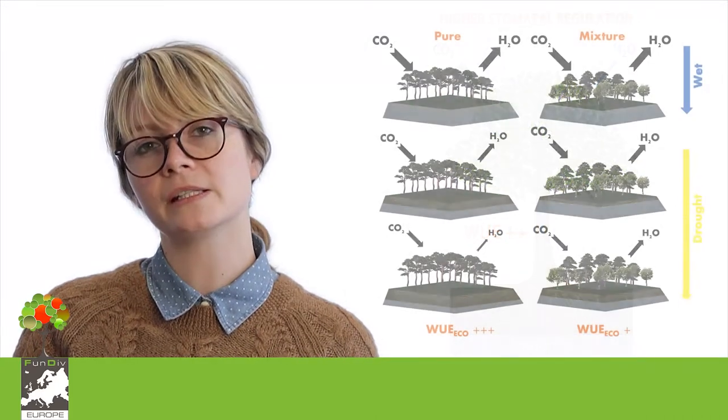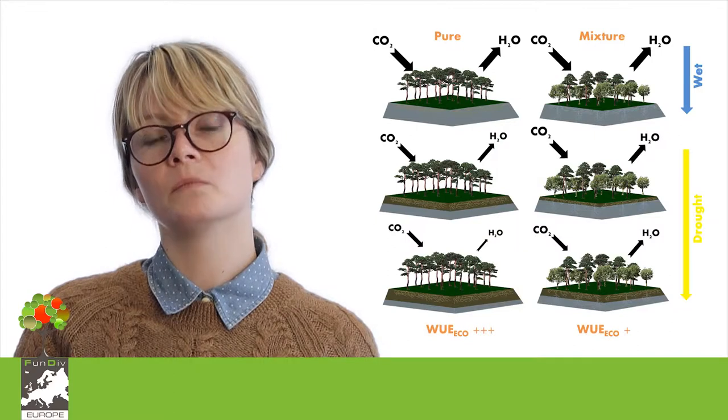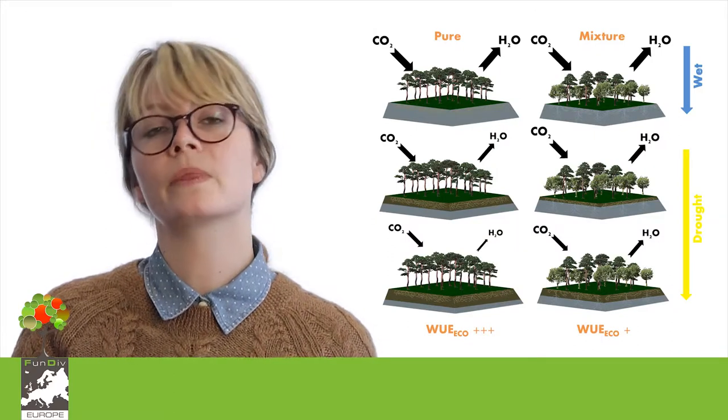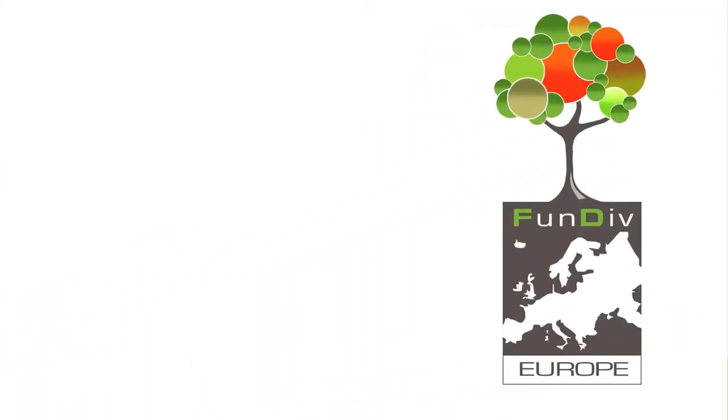This means that trees in the monoculture are suffering more from drought stress than trees in the mixture. Overall, our findings suggest that a possible way to adapt forest ecosystems to future climatic conditions is to favour the management of mixed species stands instead of monocultures.